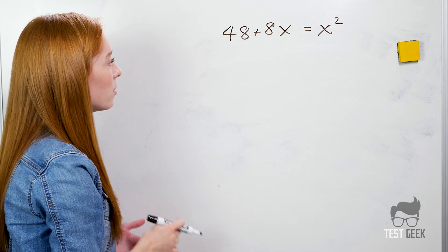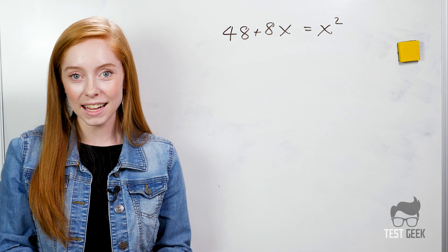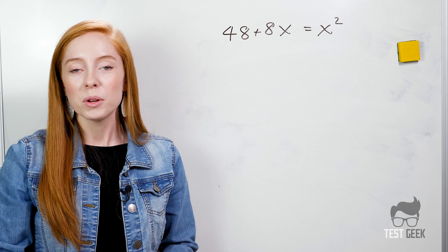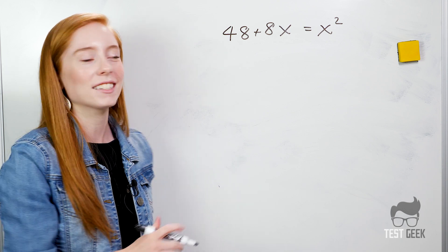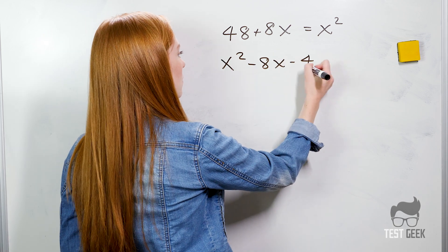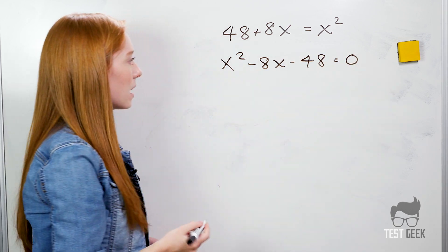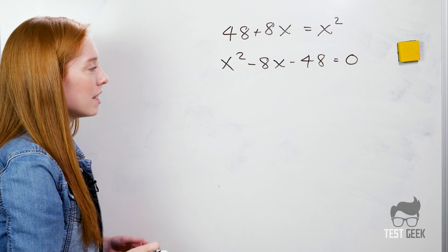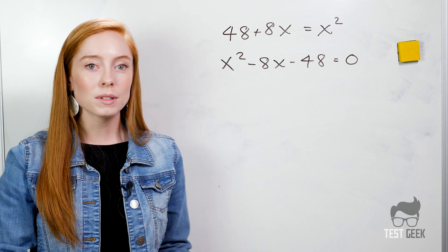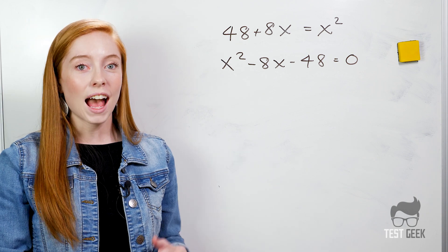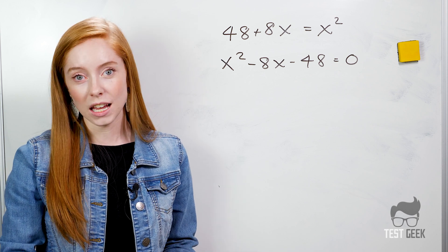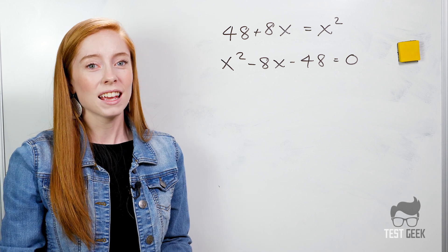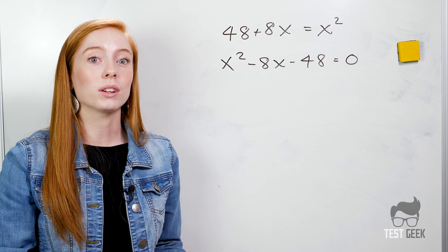What is one possible value of x if we have 48 plus 8x equals x squared? Well the first thing we have to do is put this in our normal trinomial format so that we can factor. So we have x squared minus 8x minus 48. We're looking for two numbers that multiply to give us negative 48 and add up to give us negative 8. This is another reason that you need to know your multiplication tables before taking this test. It can really slow you down if you're struggling here.